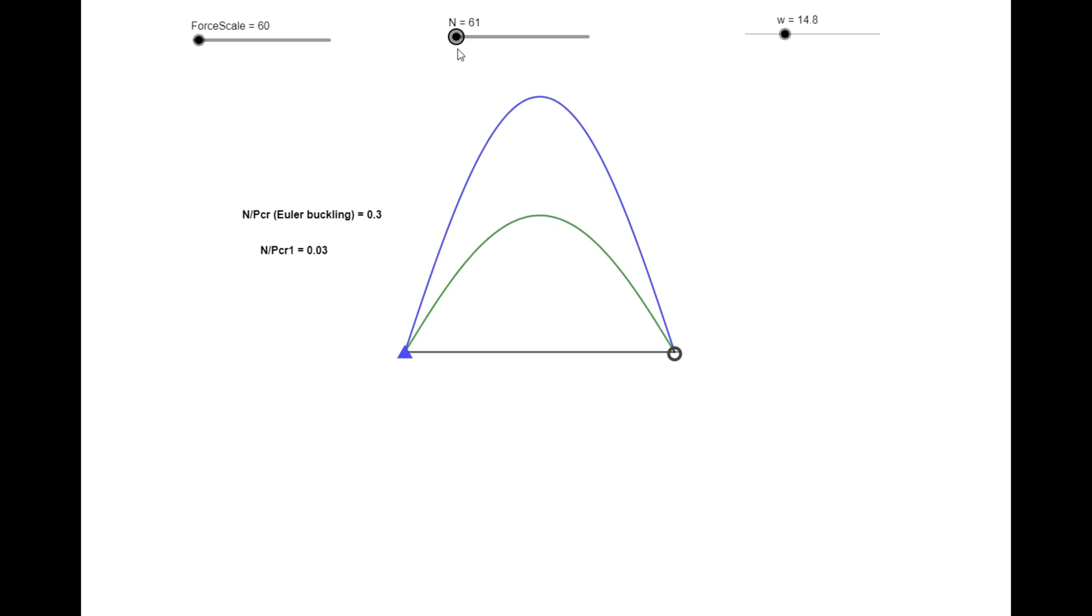For the green curve, we can see that as the normal force increases, the deformation decreases. And for the blue curve, we can see that as the normal force increases, the deformation increases as well. Because compression lessens the stiffness of the beam, while tension increases the stiffness of the beam.